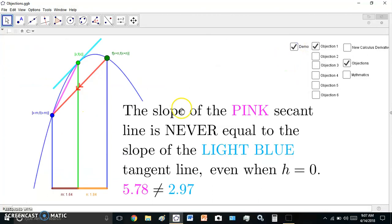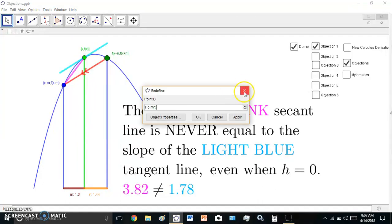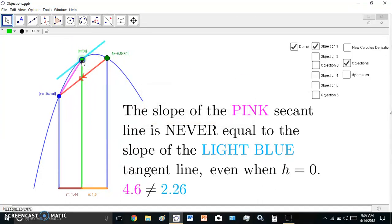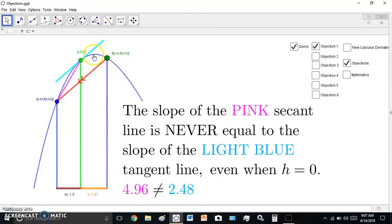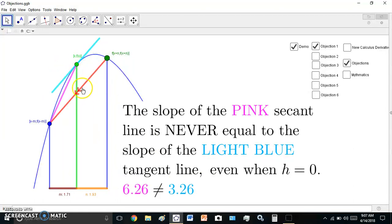So let's see a demo. The slope of this pink secant line is never equal to the slope of the blue tangent line. Never. It doesn't matter what you do. But in the new calculus, it is equal to the slope of the light blue line always. So you can see the slopes here. 4.96 is the slope of the tangent line and 2.48. And obviously, this is always correct because it's a correct slope.